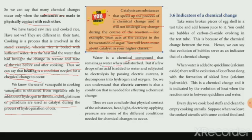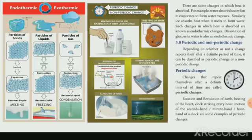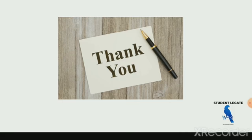If a few drops of acid are added to water and electric current is passed through it, electrolysis occurs — it decomposes water into hydrogen and oxygen. So electric current is also a condition needed for chemical changes. In summary, the different conditions needed for chemical changes include: heat, light, electricity, applying pressure, and physical contact between substances. Like, share and subscribe to Student League. Thank you, see you next time.